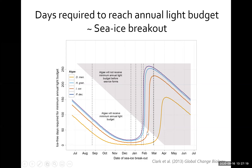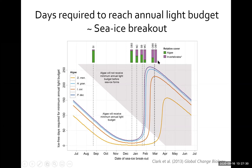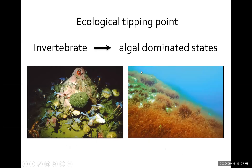The point is that we can go from a situation where there's plenty of light for algae to not enough light within a few weeks' range of the time of the sea ice breakout. When we map this to benthic surveys where we deployed these light meters, we can see a really strong pattern — where sea ice breaks out in these later areas there are almost entirely invertebrates, whereas where it breaks out much sooner it's almost entirely algae. This transition period is, in ecological terms, a fairly small window in order to switch between these ecosystem states. What we're arguing is that this is actually an ecological tipping point — these communities can transition from invertebrate- to algal-dominated states and are quite sensitive to the timing of the sea ice breakout within a matter of weeks.